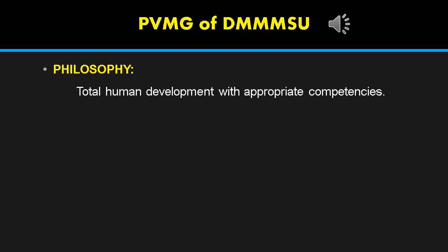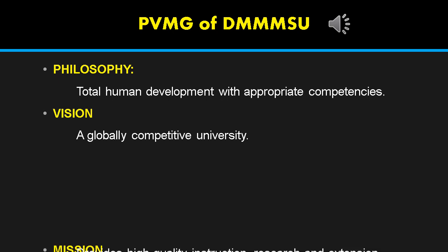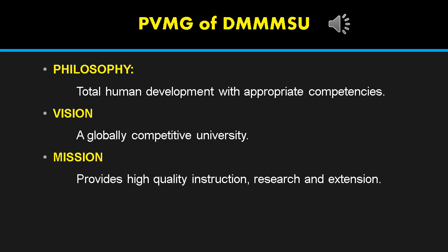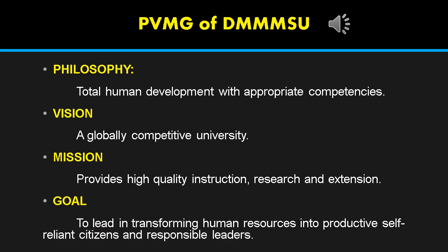Being part of DIMSU, you must know the philosophy, vision, and mission, as well as the goal of the university. For the philosophy: total human development with appropriate competencies. Vision: a globally competitive university. Mission: provide high quality instruction, research, and extension — to lead in transforming human resources into productive, self-reliant citizens and responsibilities.